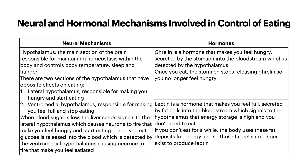Looking at hormones, there are two main hormones involved in eating and feeling full. Ghrelin is a hormone that makes you feel hungry, secreted by the stomach into the bloodstream, which is detected by the hypothalamus. Once you eat, the stomach stops releasing ghrelin, so you no longer feel hungry. Then you have leptin, which is a hormone that makes you feel full, secreted by fat cells into the bloodstream, signalling to the hypothalamus that energy storage is high and you don't need to eat. If you don't eat for a while, the body uses these fat deposits for energy, and those fat cells no longer exist to produce leptin.